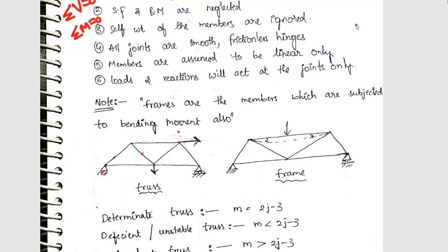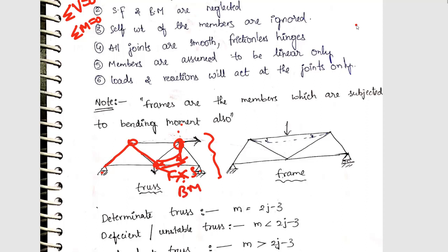There are a few assumptions you have to understand in the case of trusses. First, all joints are pin joints. All members are perfectly straight — you will never see a curved member in a truss. If the member is curved, there will be a perpendicular distance between the force and the point, generating a bending moment. Therefore a truss with a curved member should be classified as a frame. First assumption: individual members of trusses are subjected to axial forces only — this axial force can be compression or tension. Shear force and bending moment are both neglected in trusses.